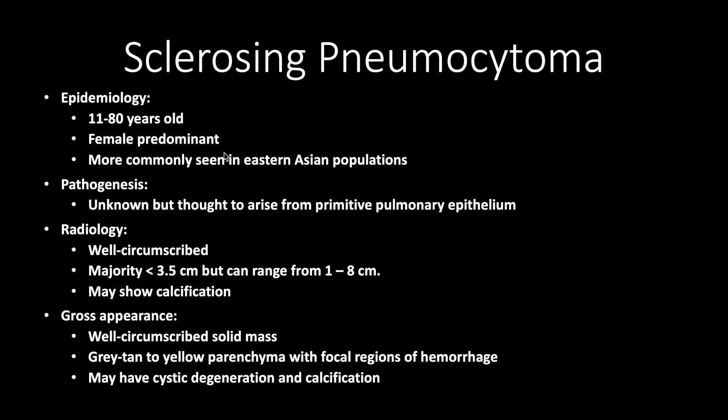Sclerosing pneumocytoma is seen in a wide age range, from 11 to 80 years old. It is female predominant and more commonly seen in Eastern Asian populations. The pathogenesis is unknown at this time, but thought to arise from primitive pulmonary epithelia.